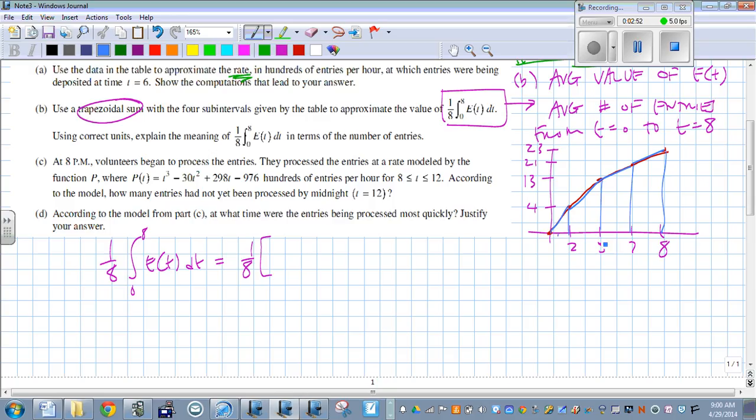So we end up with three trapezoids and one triangle here. Again, if these were the same intervals, we would be able to use a formula. But in this case, we have to do each one separately. So for this first one, it's just a triangle. One half, our base is 2, height is 4.